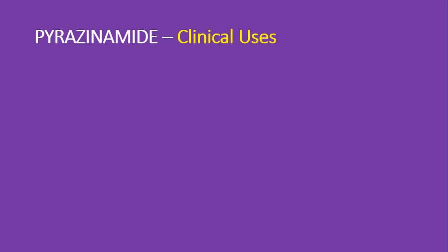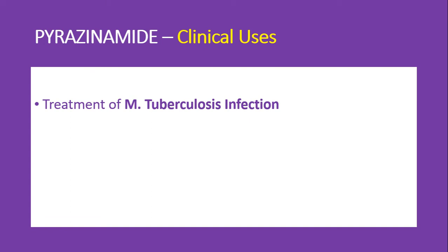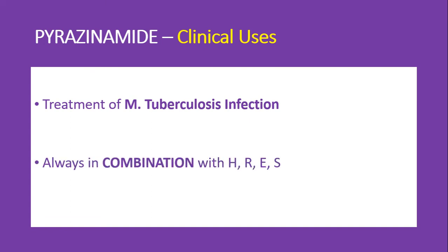Regarding clinical uses, pyrazinamide is used in the treatment of mycobacterial tuberculosis infection. It is always used in combination with other first-line anti-tubercular drugs like isoniazid, rifampicin, ethambutol, and streptomycin. Pyrazinamide is also useful in the treatment of meningeal tuberculosis.